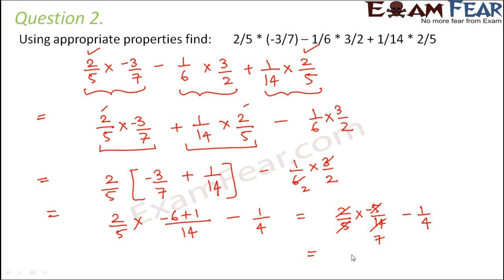So this would be equal to minus 1 by 7 minus 1 by 4. So when you take the LCM, you get minus 4 minus 7 divided by 28, and this value comes out to be minus 11 by 28. So this is the solution.